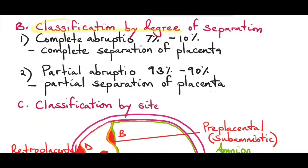Classification by degree of separation: complete abruption accounts for 7 to 10 percent of cases, where there is complete separation of the placenta. Partial abruption accounts for 90 to 93 percent of cases, where there is partial separation of the placenta.